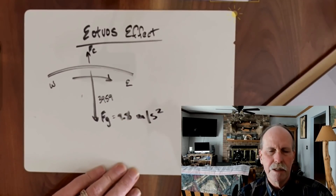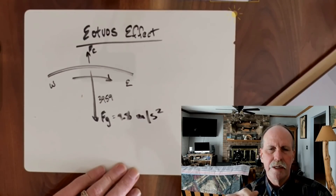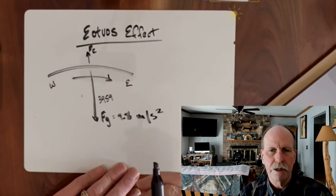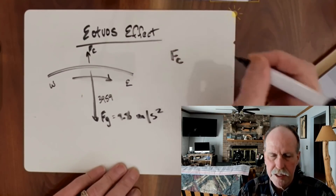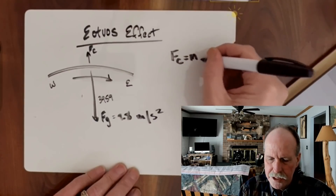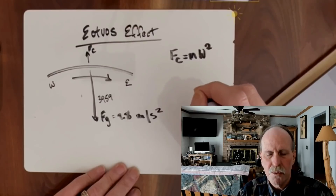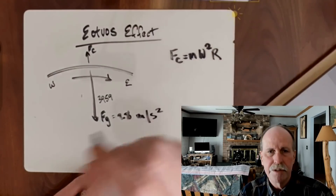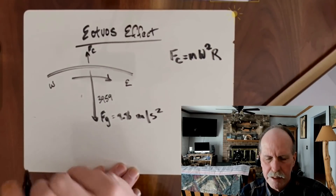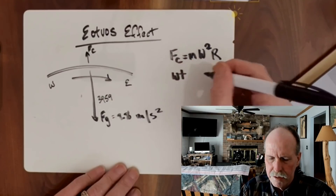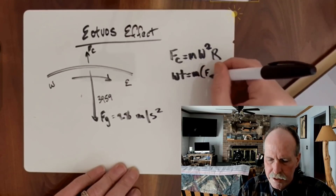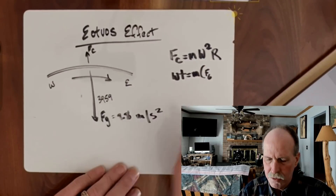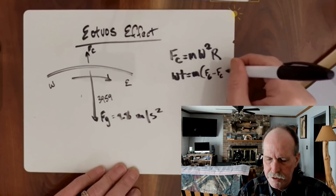A term we need to define is centrifugal force. Centrifugal force is what's called a fictitious force — if you stop the rotation, it no longer exists. However, it's defined very clearly: centrifugal force equals the mass times the rotational velocity squared times the radius of that rotation. Weight equals the mass times the force of gravity (9.8 meters per second squared) minus the centrifugal force.